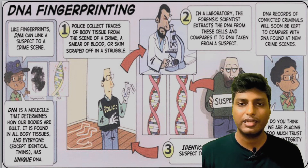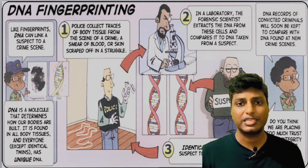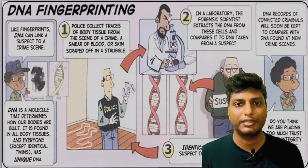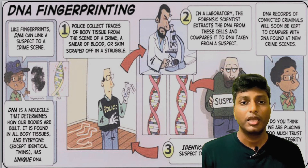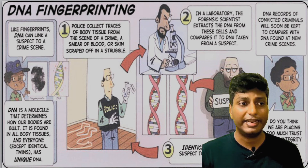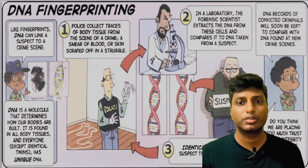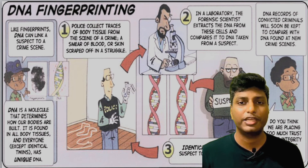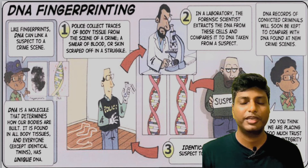If the band pattern of the suspect's DNA matches with the DNA collected from the crime scene, then the suspect may be the one who committed the crime. There are many other applications of DNA fingerprinting — for example, it can also be used to study cancer cell lines, and so on. If you know any other applications of DNA fingerprinting, please put them in the comment section.